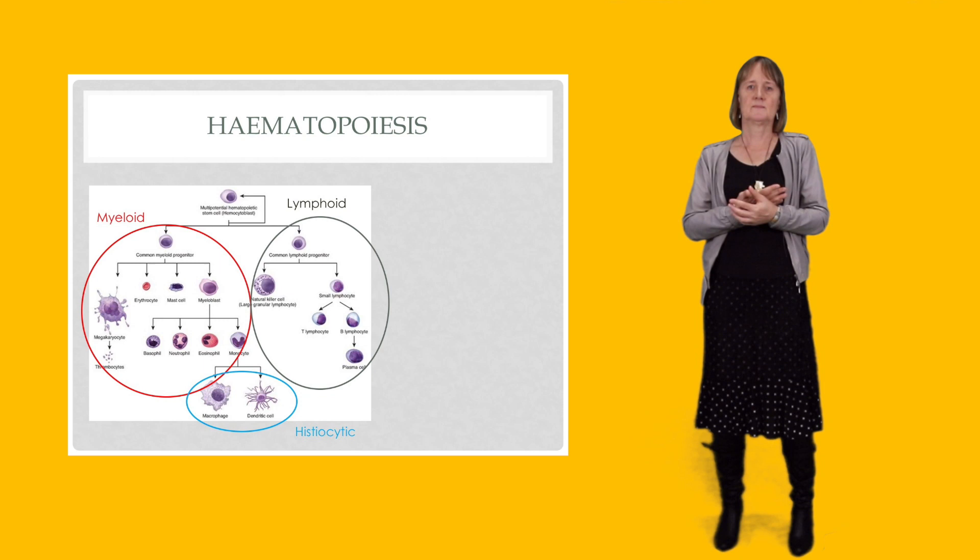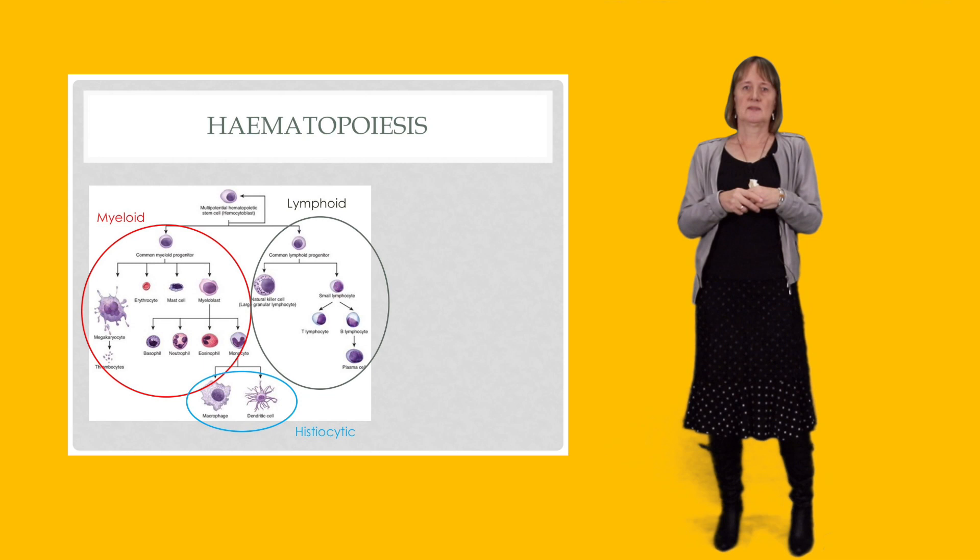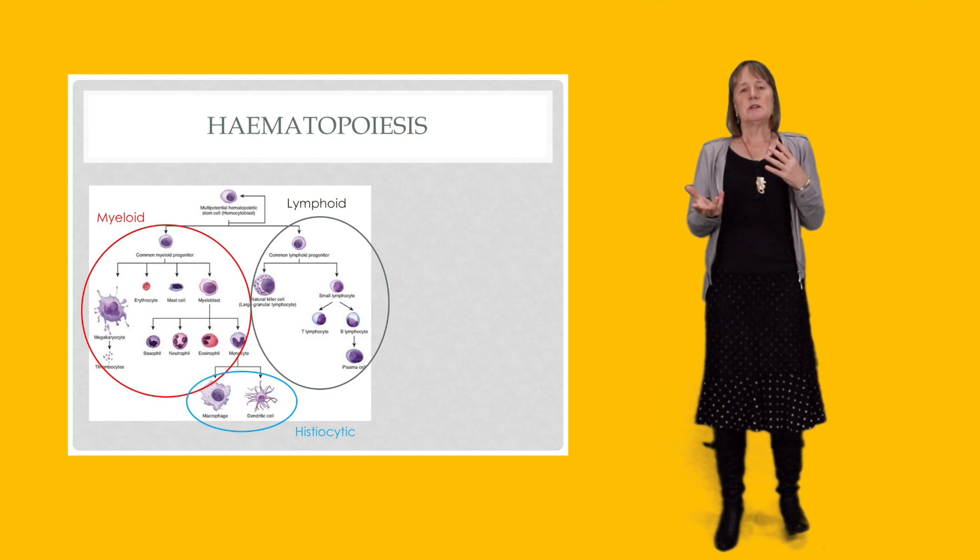So that's the platelets, the red blood cells, the granulocytes, the mast cells, and the monocytes. And the lymphoid precursor cell is capable of differentiating into natural killer cells, B lymphocytes, and T lymphocytes.